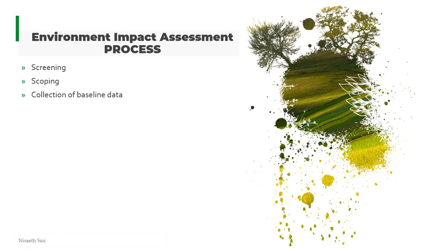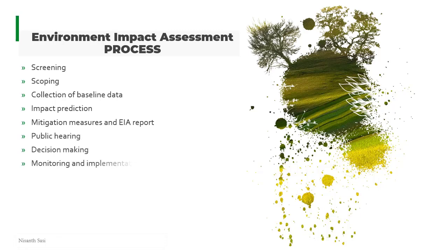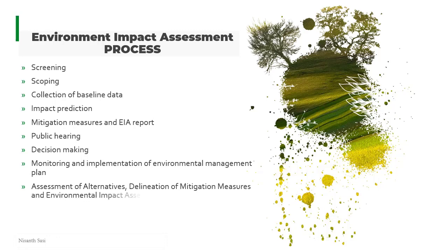The stages of the EIA process are: screening, scoping, collection of baseline data, impact prediction, mitigation measures, environmental impact assessment report, public hearing, decision making, monitoring and implementation of the environmental management plan, assessment of alternatives, delineation of mitigation measures, and finally risk assessment.